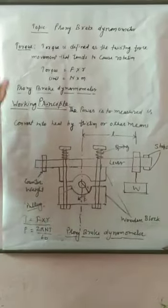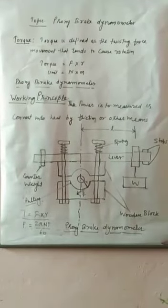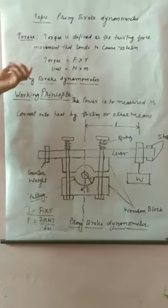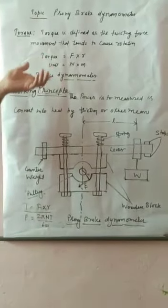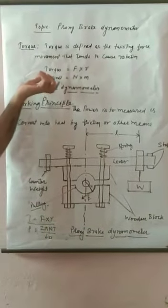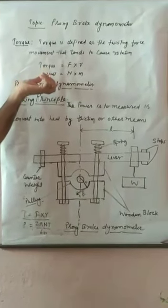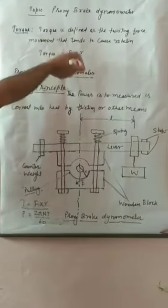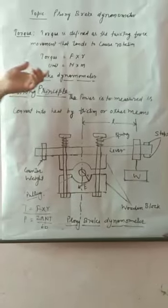First of all, we discuss what is torque. Torque is defined as the twisting moment — it is the cause of rotation, and that is known as torque. How we can find out the torque? Torque is defined by the relation: force into distance, where the distance is the perpendicular distance from the axis of rotation. The unit of torque is Newton-meter — force in Newtons and length in meters.